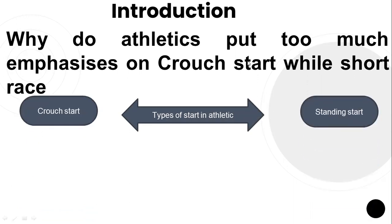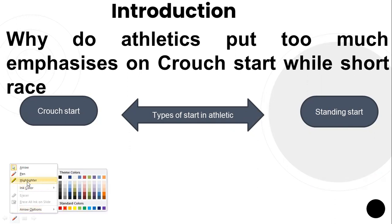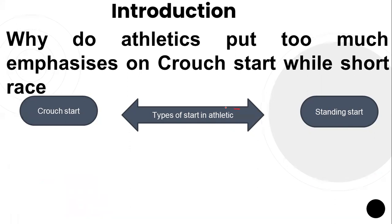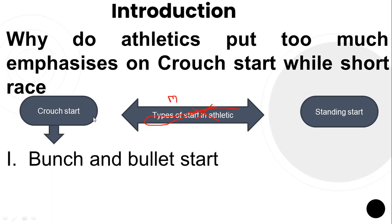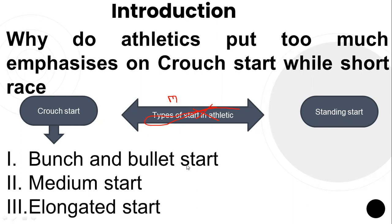The basic types of crouch start are: Bunch and Bullet start — this is very, very important for very short races like 100m, 200m, 400m. Medium start, which we have already talked about. Elongated start — the description of all these races was given in previous classes. So today we are going to talk about the crouch start and its various phases and characteristics.